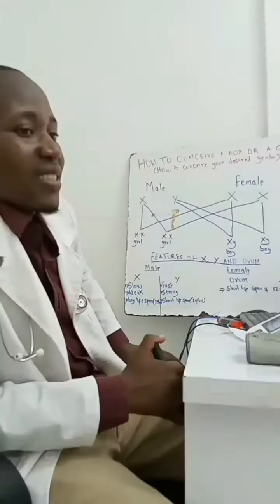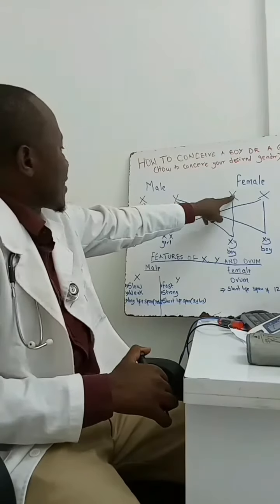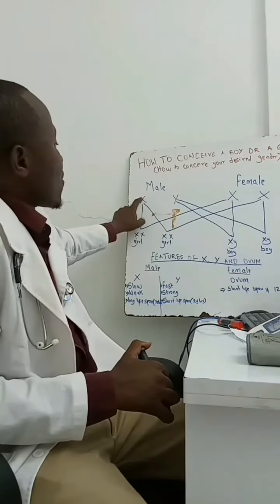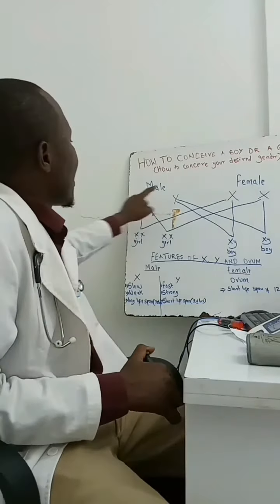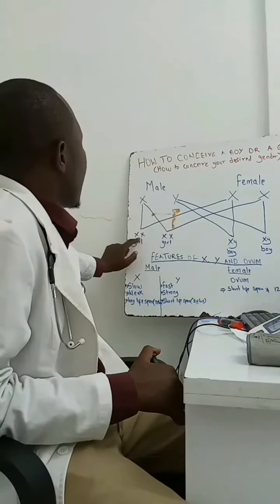Let's start with this. X can fuse with X. There is a probability of this X to fuse with either of these. If X fuses with X, it will form a baby girl.